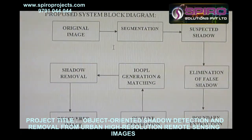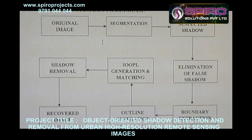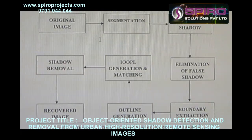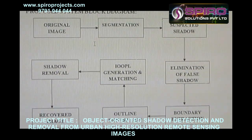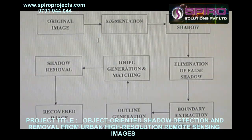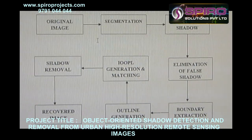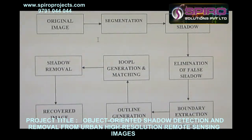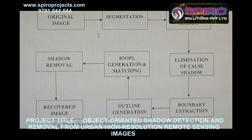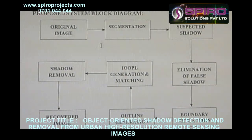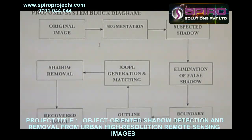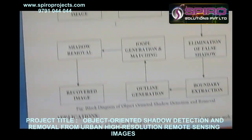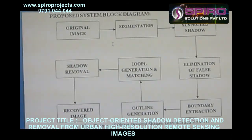Proposed system block diagram: the original image is segmented and then the shadow is eliminated through boundary extraction. Outline generation is performed by OOPL generation and matching.